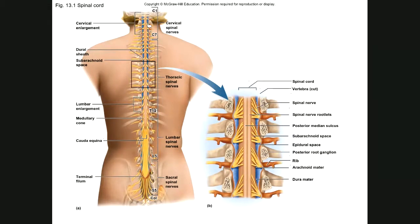One of the functions is conduction — it will transmit or conduct nerve impulses up and down your nervous system. Another function is neural integration. Neural integration is where, within the spinal cord, the sensory and motor signals come together and are integrated and associated together.